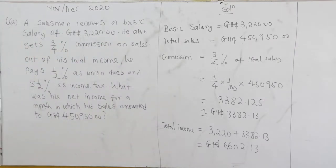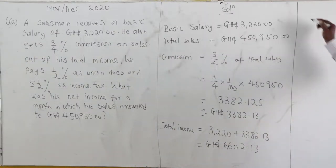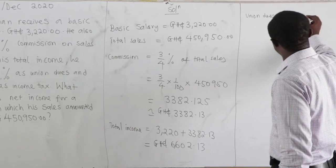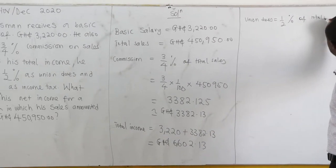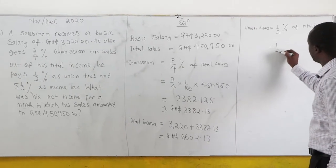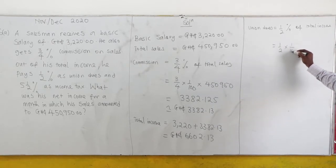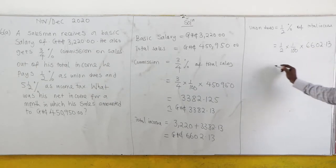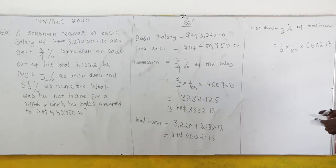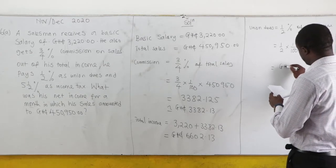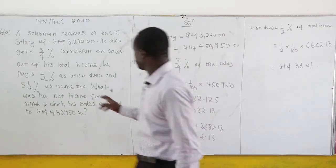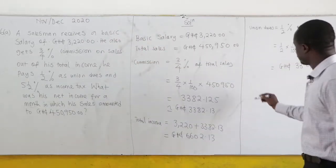We are also told that he pays 1/2 percent as union dues, and this is calculated out of his total income. So union dues equals 1/2 percent of total income. That is 1/2 times 1/100 times 6602.13, which gives us 33.01 cedis.